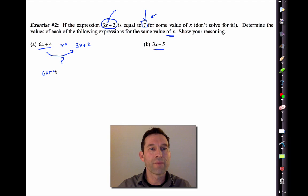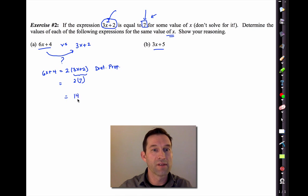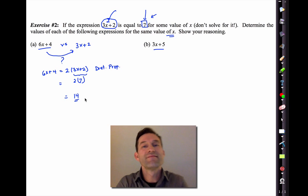6x+4 is twice 3x+2, right? That's by using the distributive property. I'm not going to write it all the way out. But the distributive property, we can see that. But 3x+2 is equal to 7, right? That's what it's equal to. So 6x+4 must be 14. Got it? That might be a little bit tricky. We're going to be looking at this more.